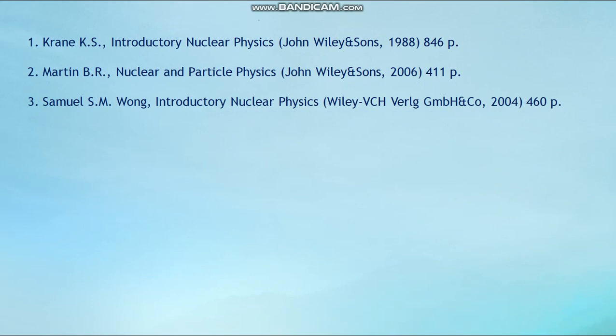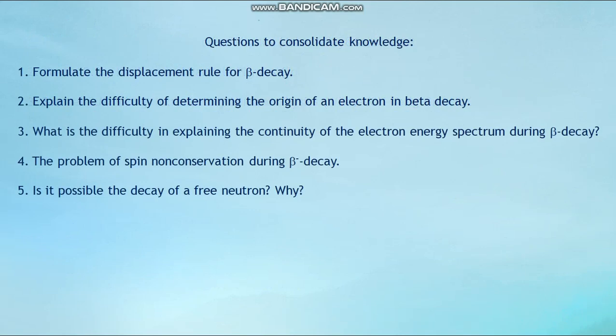In conclusion, the review questions to consolidate knowledge are: first, formulate the displacement rule for beta decay; second, explain the difficulty of determining the origin of the electron in beta decay; third, what is the difficulty of explaining the continuity of the electron energy spectrum during beta decay; fourth, the problem of spin non-conservation during beta minus decay; fifth, is decay of the free neutron possible and why? Thank you for your attention.